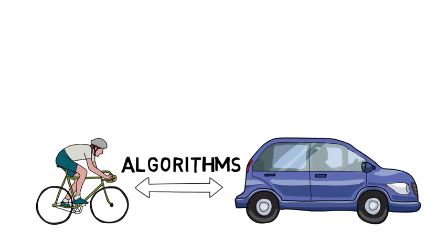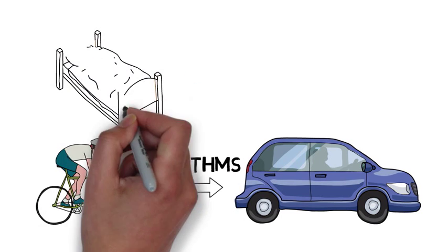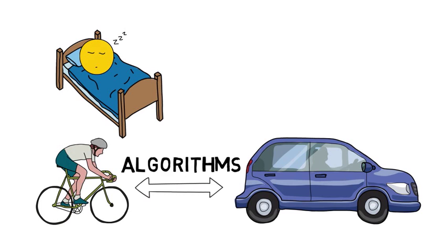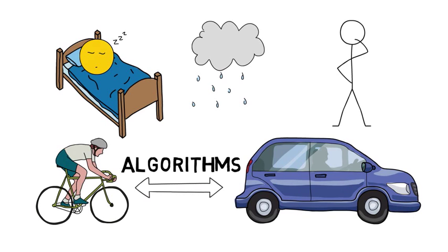There's a required final outcome, getting to class on time, and a range of factors that affect how you get there. You overslept, it's raining, or perhaps you stayed at a friend's house overnight so your route will be different. But the end result is the same, getting to class on time.